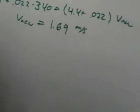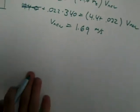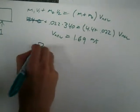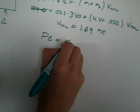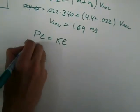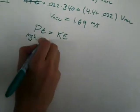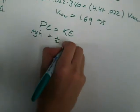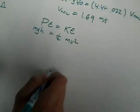And with the conservation of energy, we can say that PE equals KE, and PE is mgh equals KE, which is 1/2 mv².